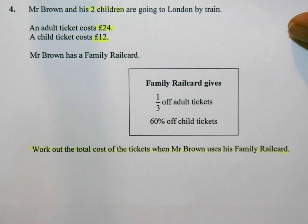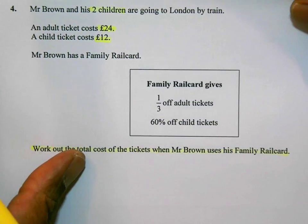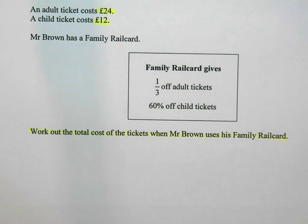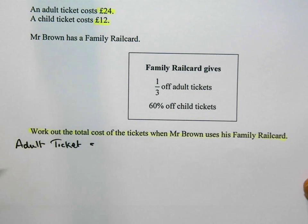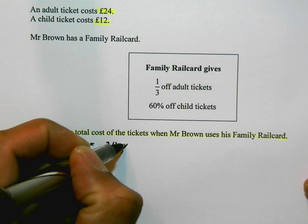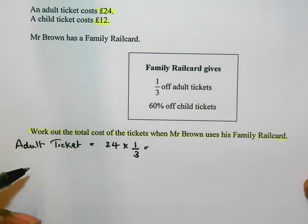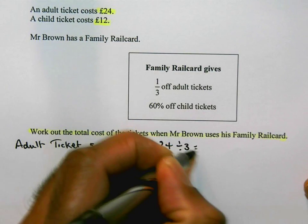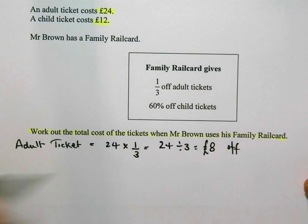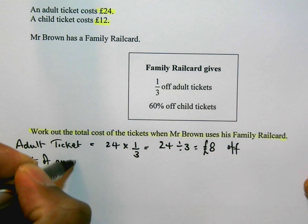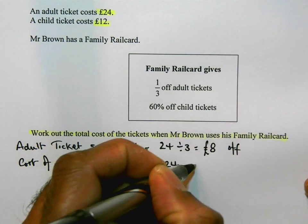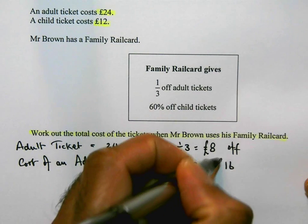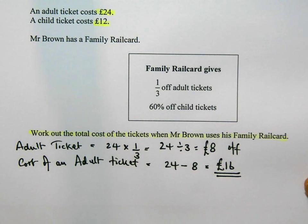So we want to work out the total cost. What we need to do is find certain percentages or fractions of the two prices we've been given. He gets a third off an adult ticket. So for an adult ticket, he gets one third off. We have £24 and we're going to find a third of that — 24 divided by 3 — that's how we work out a third of 24, and that's 8. So he gets £8 off. So the cost of an adult ticket is going to be £24 take away the £8, so he's going to pay £16 for his ticket.